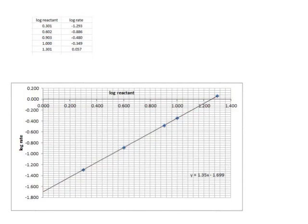Now we can determine the gradient of this graph and I've got it already here, so the gradient our m equals 1.35. So this would be the rate order of our reaction.